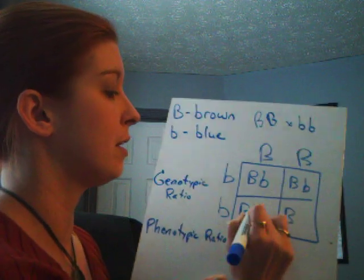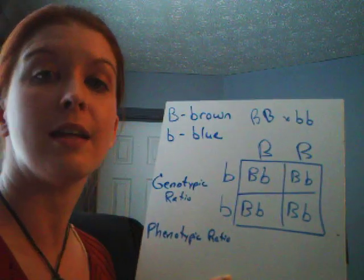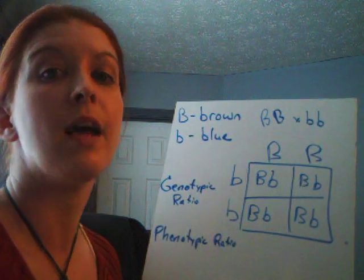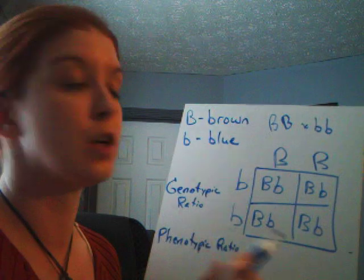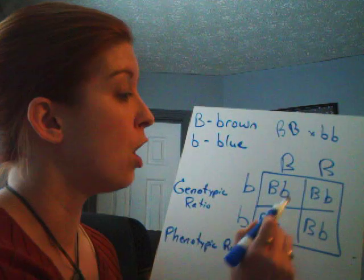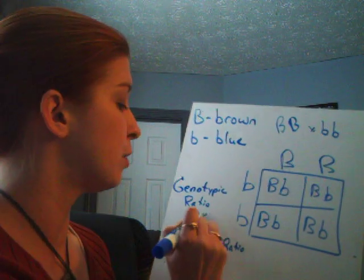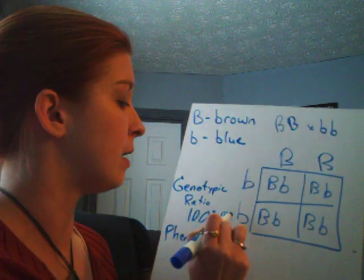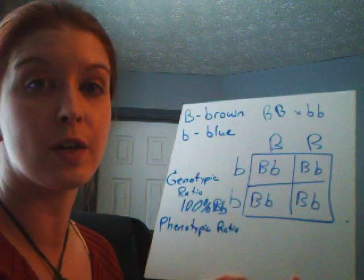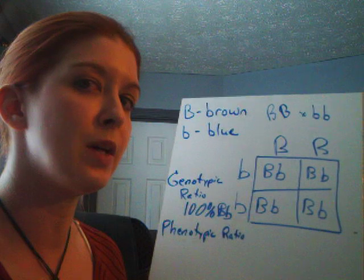Then you bring the little letters across — little b, little b, little b, little b. All of these babies are going to be exactly the same. The word for when they're different like this is heterozygous. So looking at the genotypic ratio — just the letters — all 100% are going to be big B, little b. Even though it has both letters present, because there is a big B there, the big B wins because it's dominant.